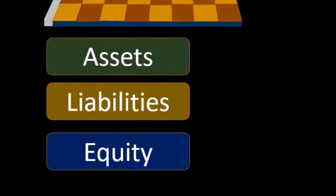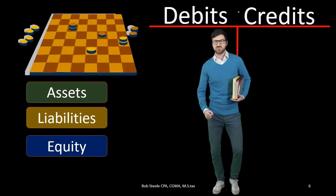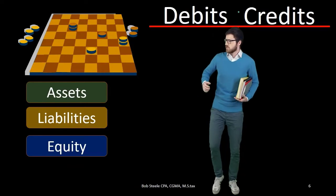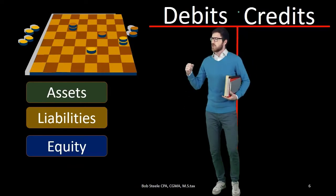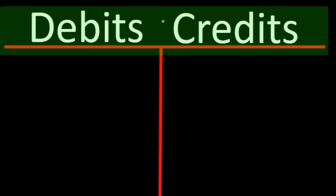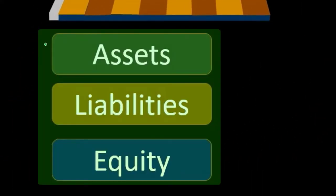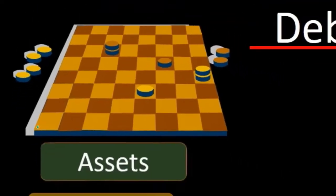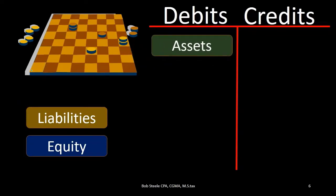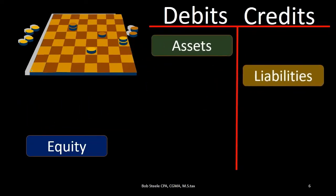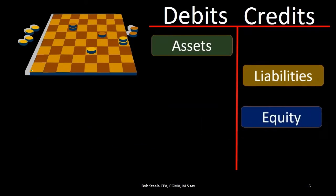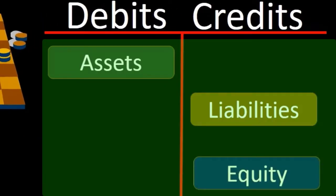For now, keep this definition as you work with financial statements: debits are just on the left, credits are on the right. Then we just need to line up our pieces on the board in accordance with the rules, just like setting up a checkerboard: assets are going to be debit normal balance accounts, liabilities are going to be credit normal balance accounts, and equity is going to be a credit normal balance account. That is all there is to it — you just have to memorize that.